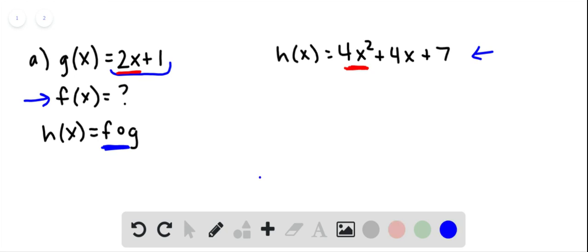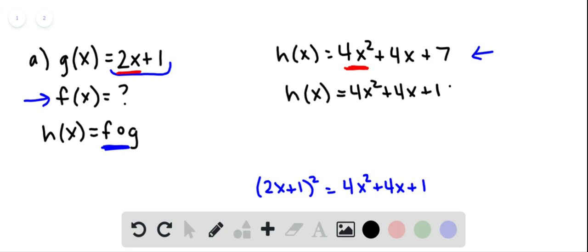g squared would be 2x plus 1 quantity squared, and that would be 4x squared plus 4x plus 1. So let's think of h as 4x squared plus 4x plus 1 plus 6. We have to get that 7 in there, so we need 1 and 6 to give us 7.